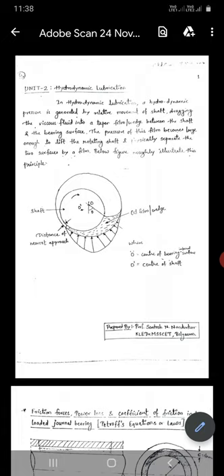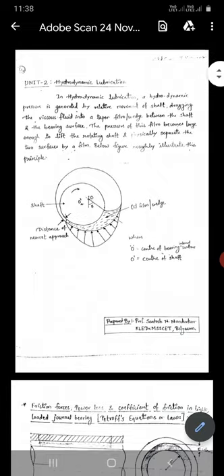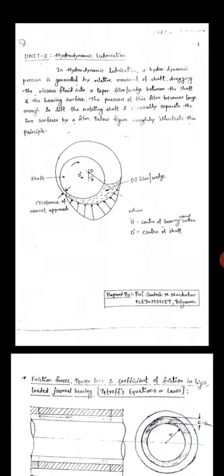The shaft in the center is O prime. The distance of the wedge, O prime is the center of the bearing, and the liquid oil film between the shaft and the bearing.